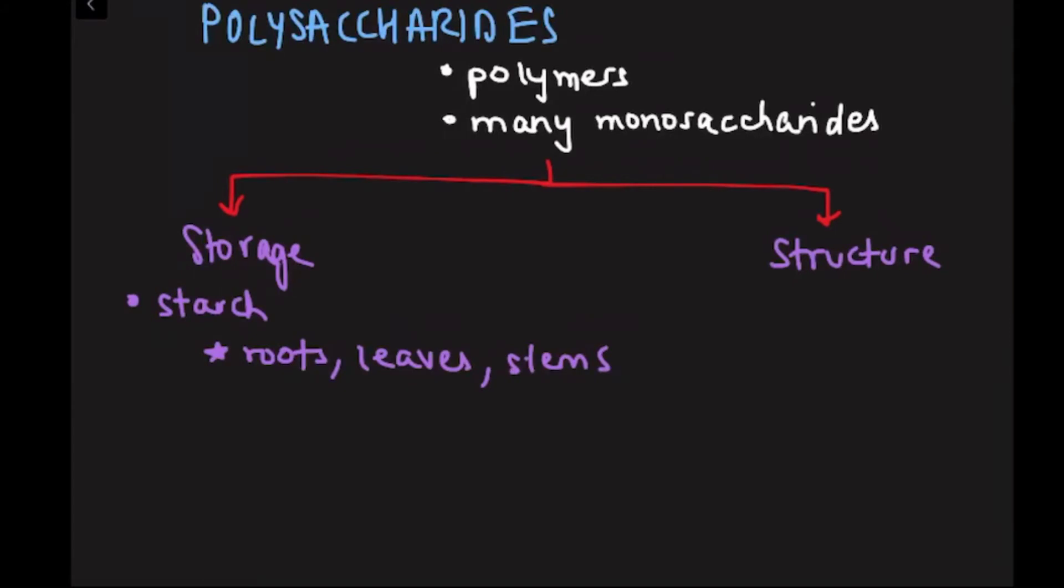An example of a storage polysaccharide in animals is glycogen. This is stored in our liver and muscle cells. Again, it can be hydrolyzed to release sugar for energy when the organism needs it.